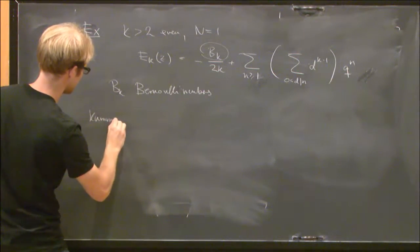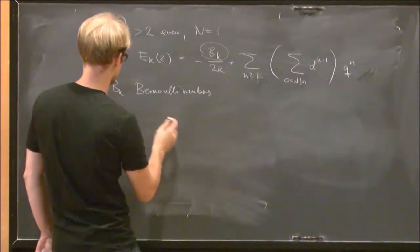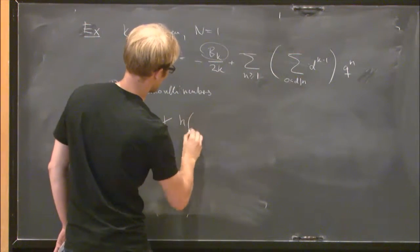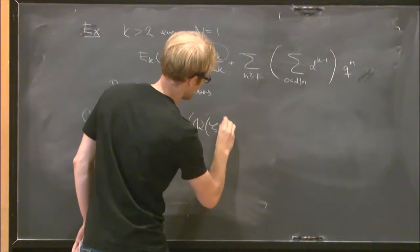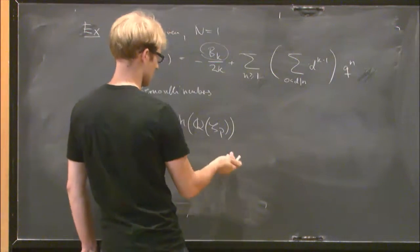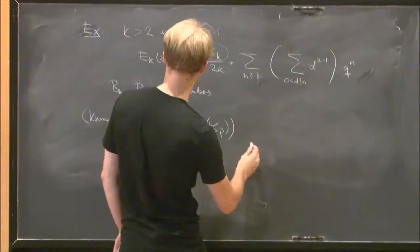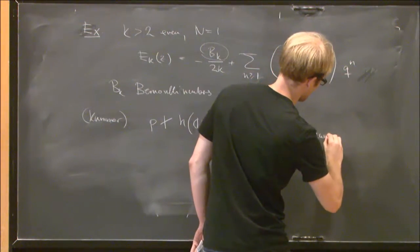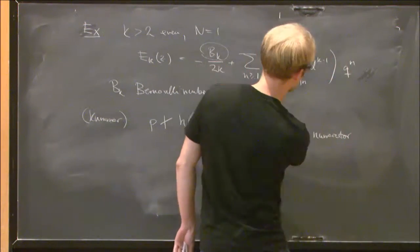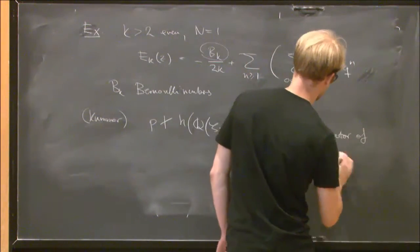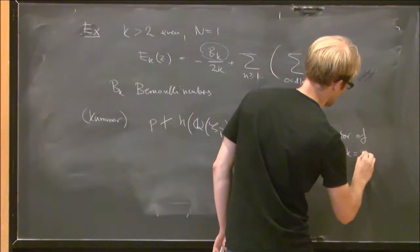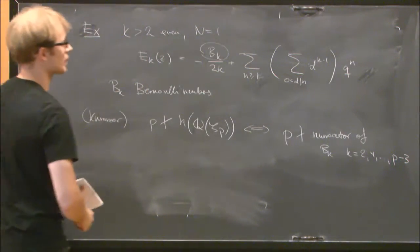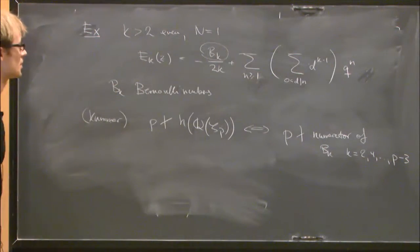which says that if I take a prime p, then p doesn't divide the class number of the field you get by adjoining the p-th roots of unity to Q, if and only if p doesn't divide the numerator, so these guys are rational numbers, if and only if p doesn't divide the numerator of the Bernoulli numbers B_k, where k going from 2 to p minus 3.